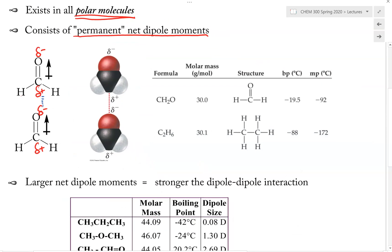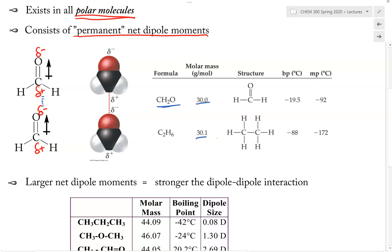Now let's discuss the significance of molecules having this dipole-dipole force by looking at some data. We have formaldehyde and another example, ethane. Comparing their molar masses: formaldehyde is 30.0 and ethane is 30.1. So their molar masses are quite similar, which means they have very similar dispersion forces, because dispersion force is a function of size or mass. So their dispersion forces are roughly the same.